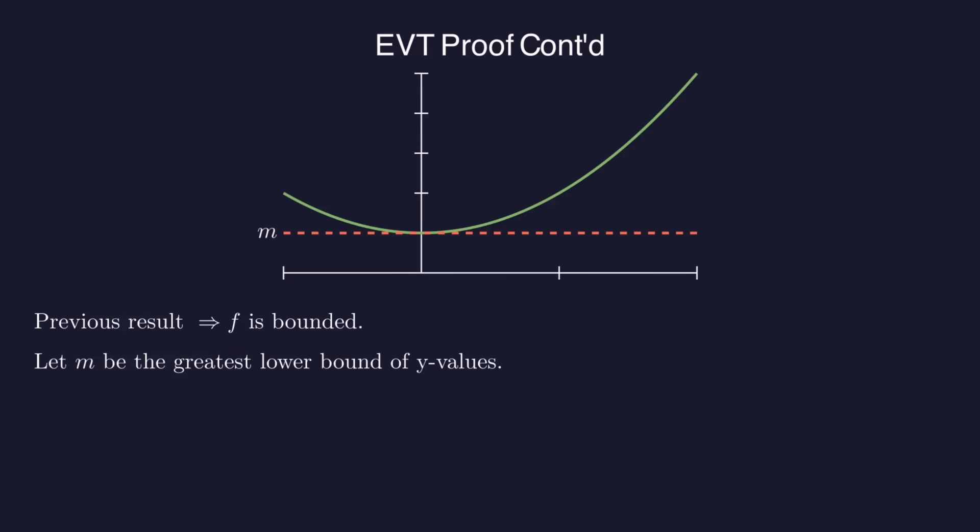Let's show that F achieves a minimum value. The proof that it achieves a maximum value is nearly identical. The previous theorem says that the values of F are bounded above and below, so we will let little m be the greatest lower bound of F. So let's assume that F never actually takes on the value M, in which case it must get arbitrarily close to M.